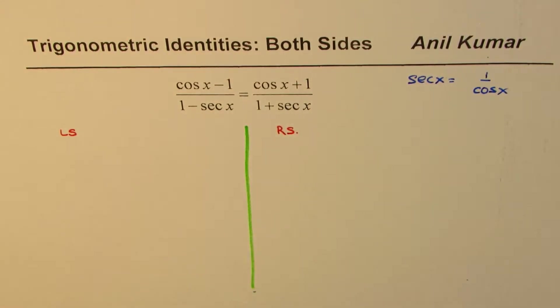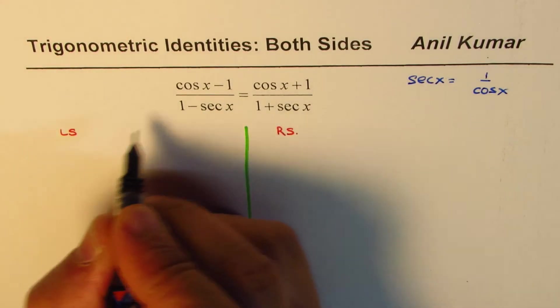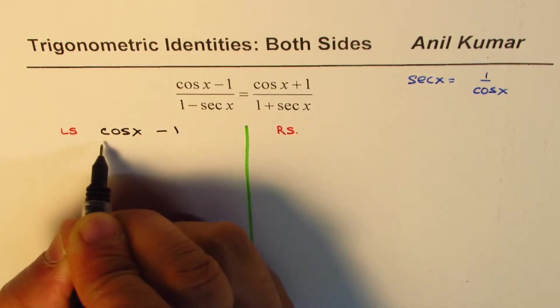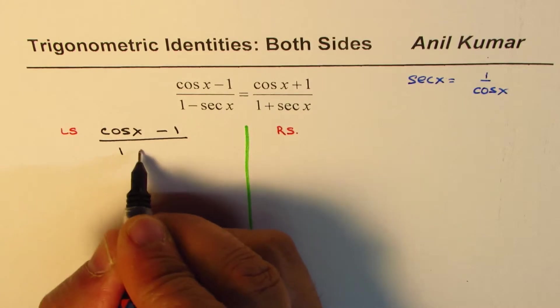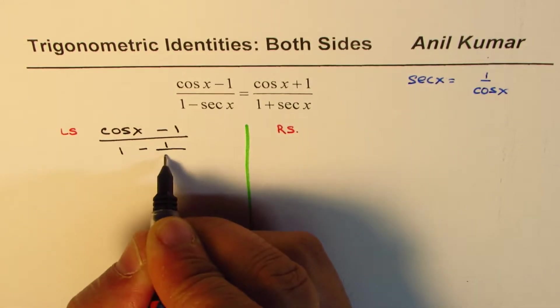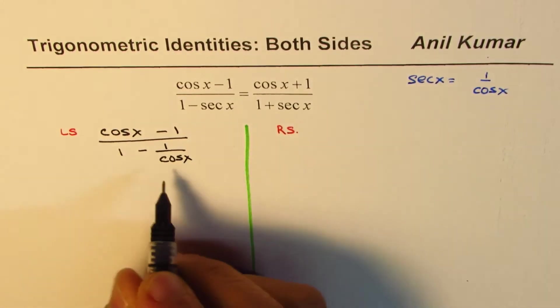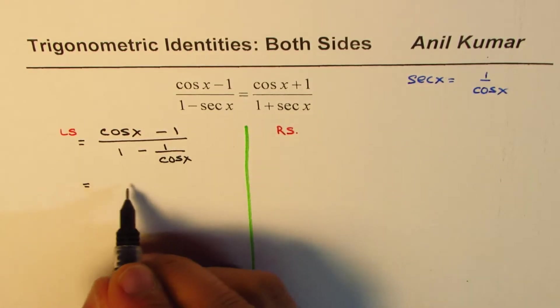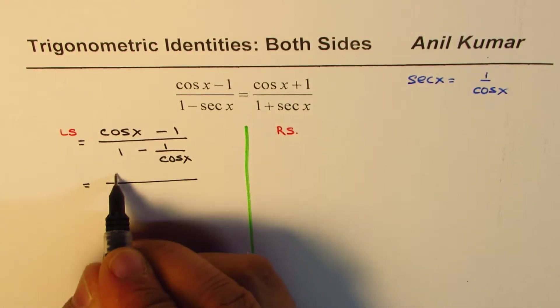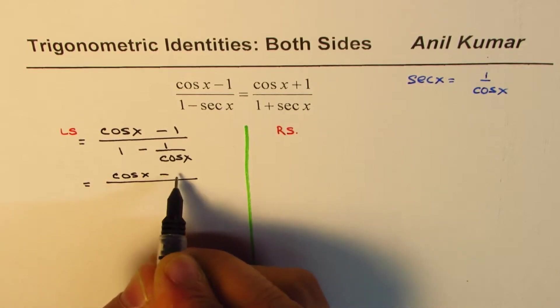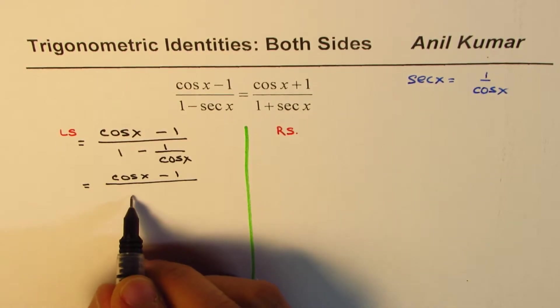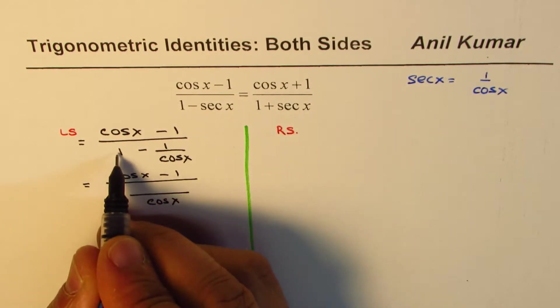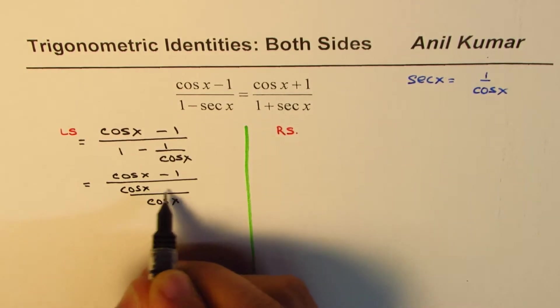The left side for us will be (cos x - 1)/(1 - 1/cos x). Now, taking the common denominator for the denominator, we get (cos x - 1) divided by (cos x - 1)/cos x.